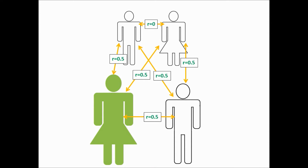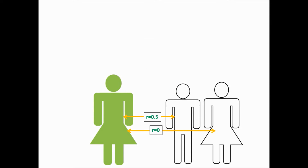Now imagine your sibling reproduced with a non-relative and produced several children. You and your sibling share a relatedness of 0.5, and you and their partner have a relatedness of zero. Therefore, you have a relatedness of 0.25 to each of your nieces and nephews.